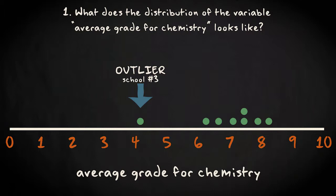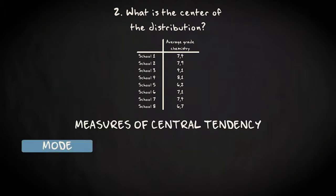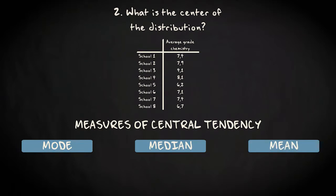The second thing you want to know is what the center of the distribution is. Well, you know that we have three measures of central tendency. The mode, the median and the mean. Let's start with the mode. There is one value that occurs twice, 7.4. So the mode is 7.4.